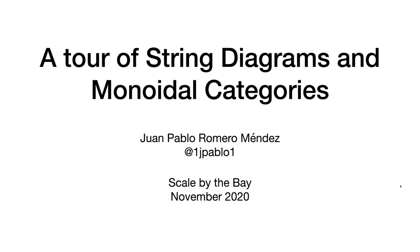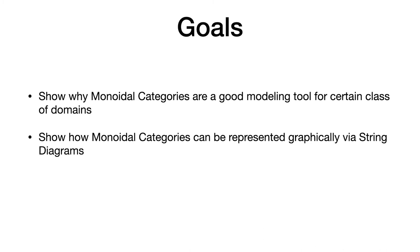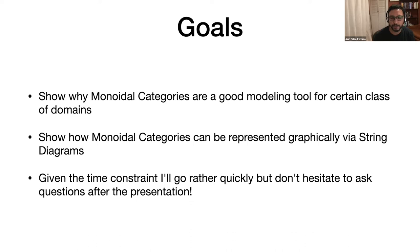Hello. My name is Juan Pablo Romero, and I'd like to take you on a tour of string diagrams and monoidal categories. I have a few goals in this talk. First of all, I'd like to show you why monoidal categories are a good modeling tool for certain classes of domains. Also, I'd like to show how monoidal categories can be represented graphically via string diagrams. Given the time constraint, I'll go rather quickly, but please don't hesitate to ask questions after the presentation.